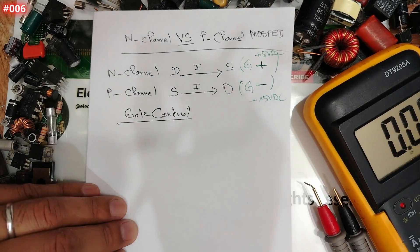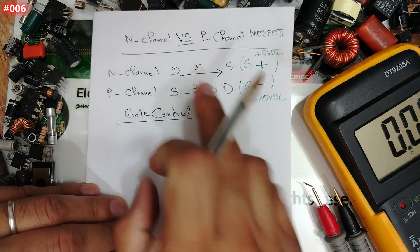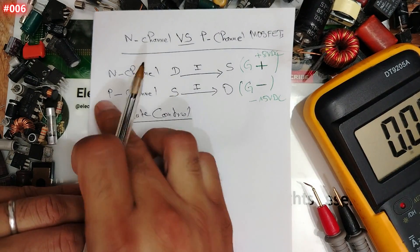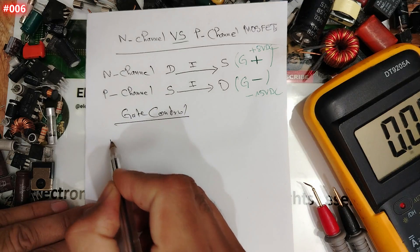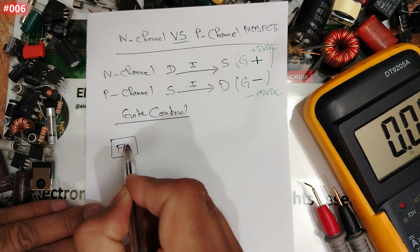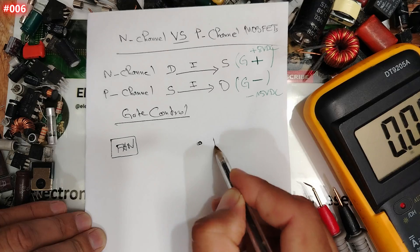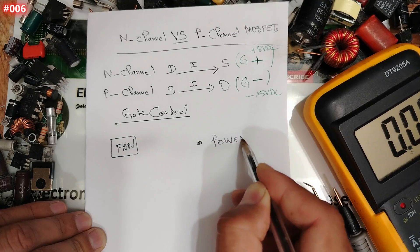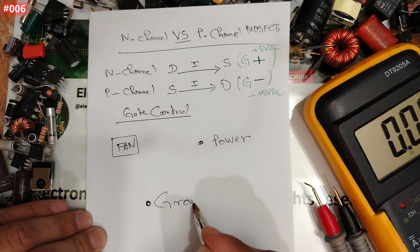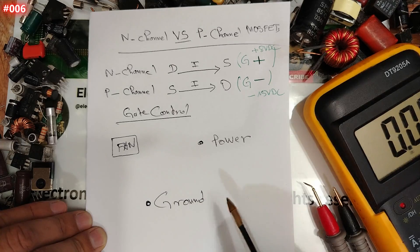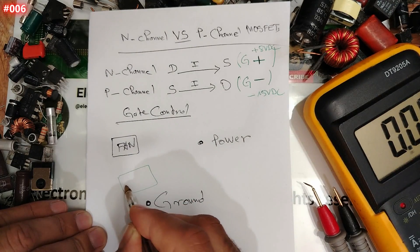When we can use an N-channel and when we can use a P-channel. For example, let's say we have here a fan. We have a fan over here for laptop, for example. Here we have the power, and over here we have ground.